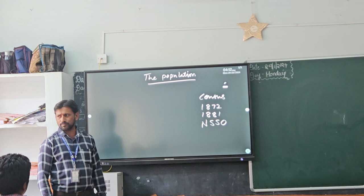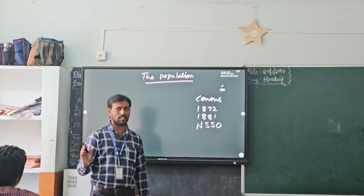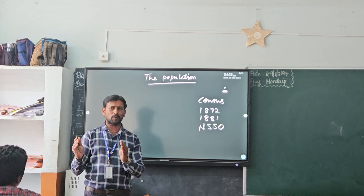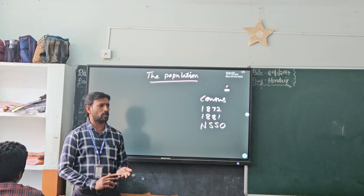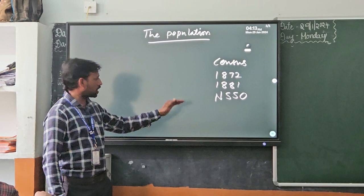National Sample Survey Organization. Every 10 years we collect population details. In the calculation of population details, the government takes into consideration various parameters like age composition, literacy levels, sex ratio, density of population, labour force, and children's ratio. All these parameters are considered while calculating the census.